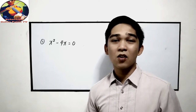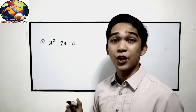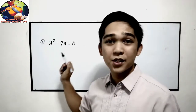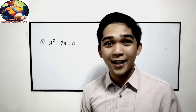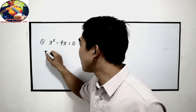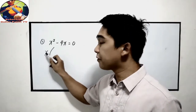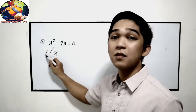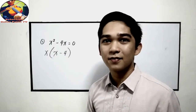First, determine the common factor of the coefficient, then the variable. For the coefficient, the common factor is 1. For the variable, the common factor is x, because x is the lowest exponent. That means x times the other factor. x squared divided by x is x. Negative 4x divided by x is negative 4. That is the other factor.